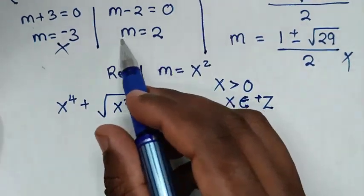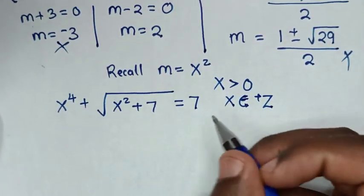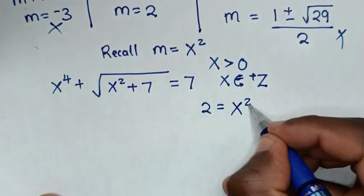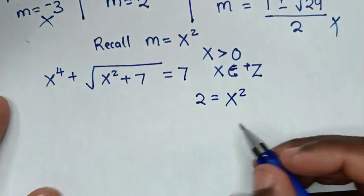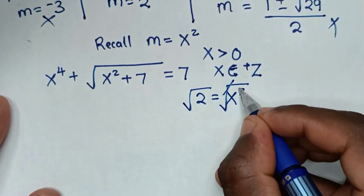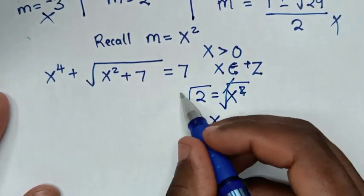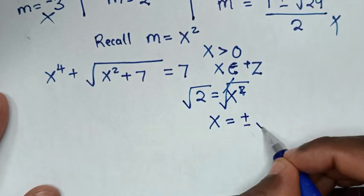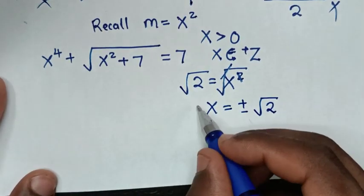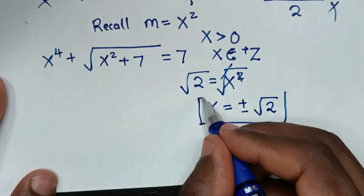From m equals 2, substituting back: 2 equals x squared. Applying square roots to both sides, x equals plus or minus square root of 2. These are the values of x for this problem.